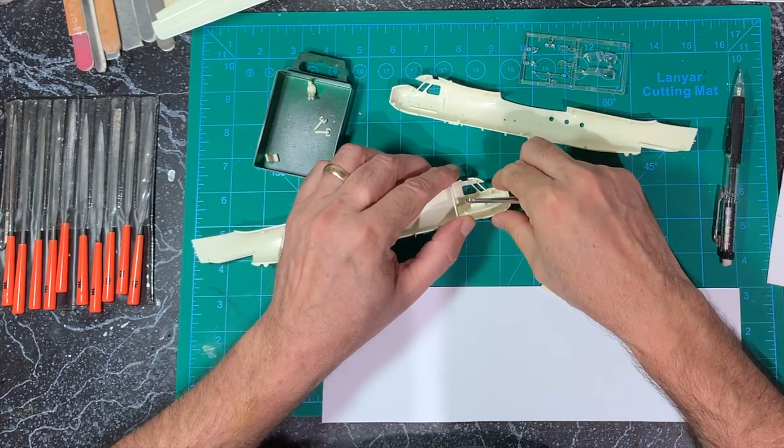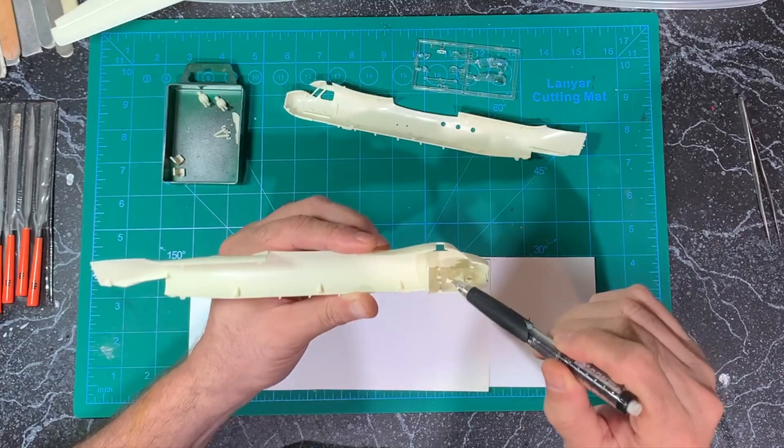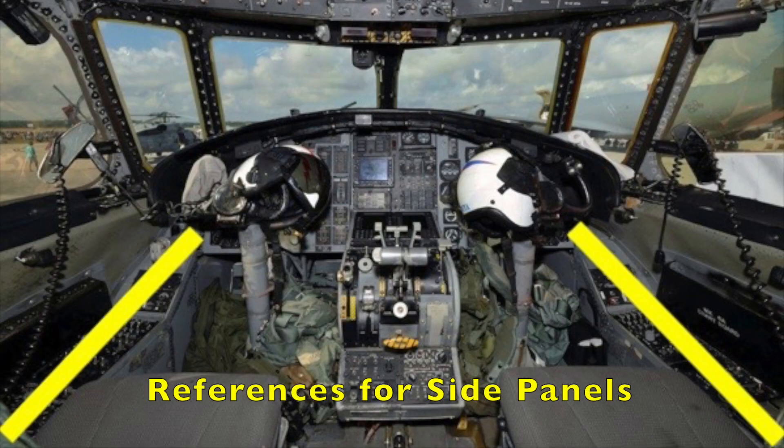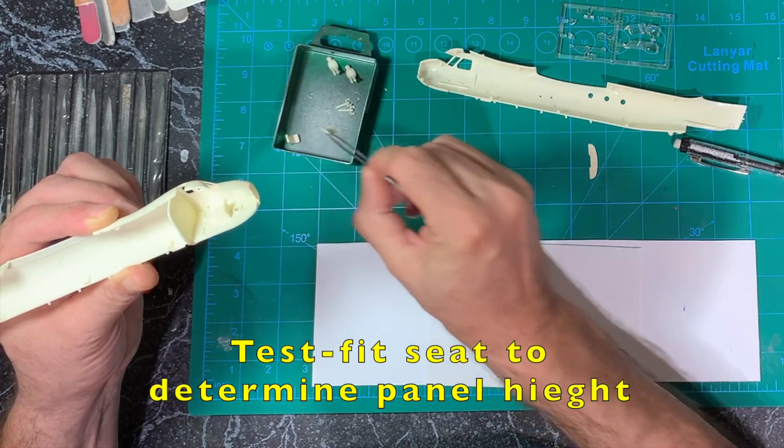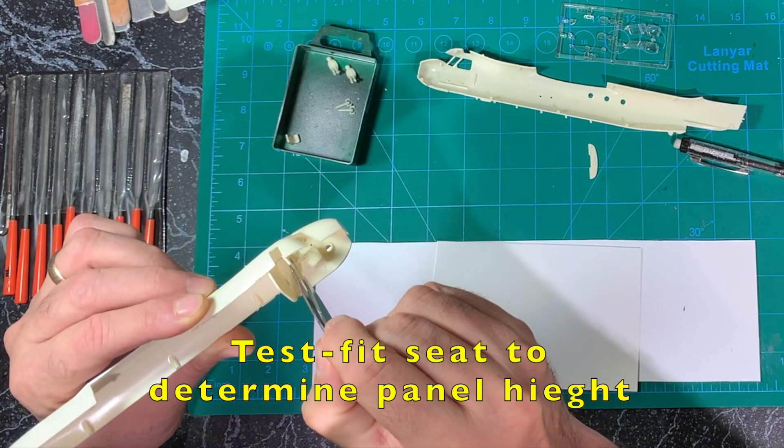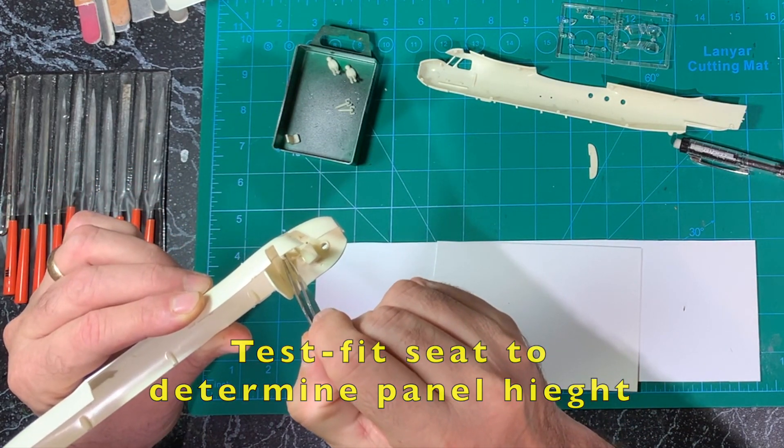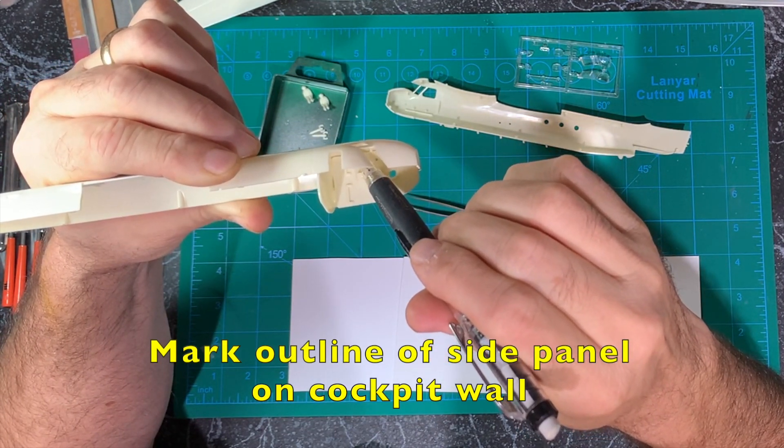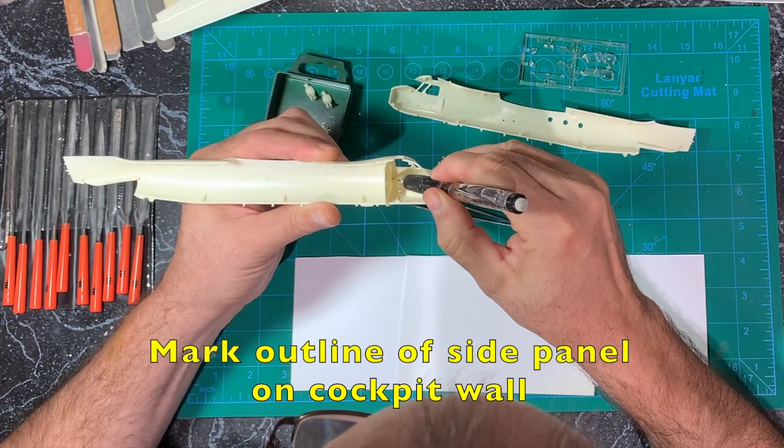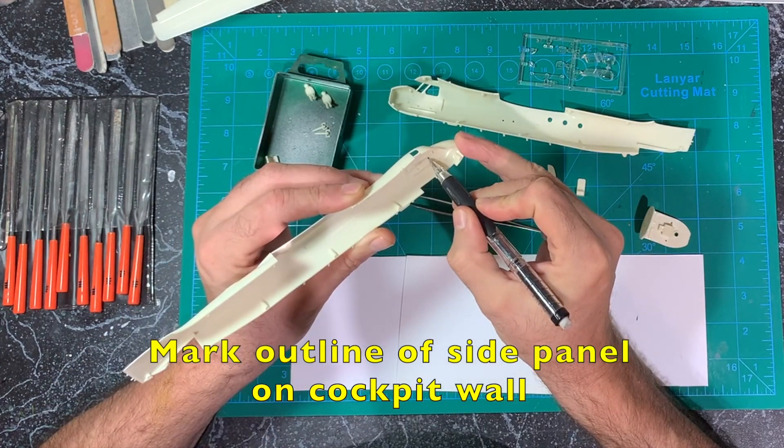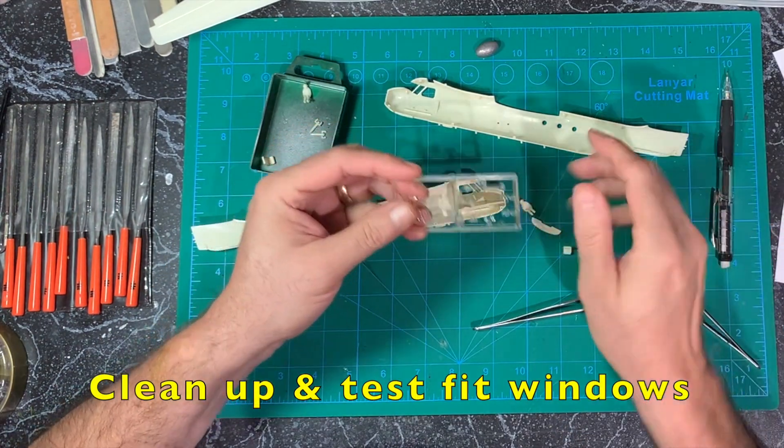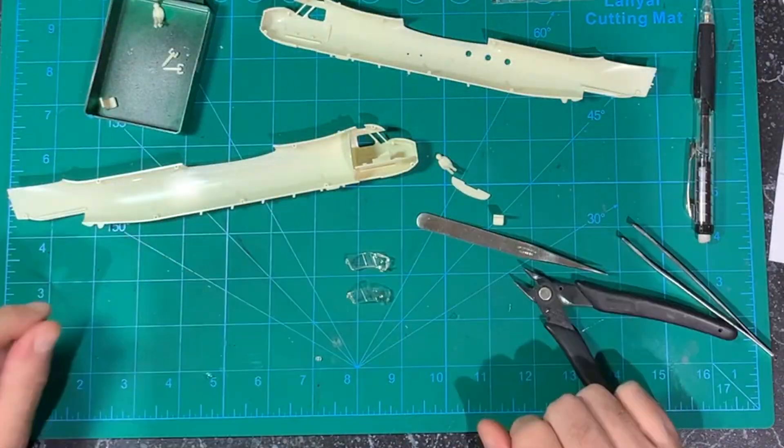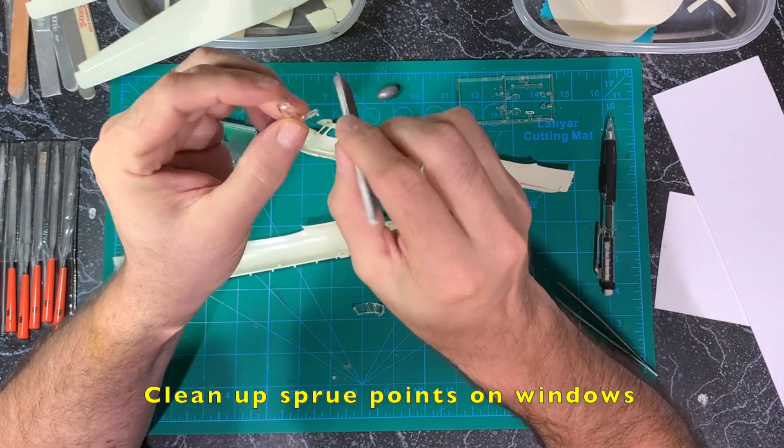I start with test fitting the cockpit floor and back wall into the fuselage. Consulting references for the side panels and noting their locations, I dry fit the pilot seat to get the approximate panel location on the wall between the seat and the window. Marking where each panel edge should be and drawing those perimeter lines gives me a rectangle on the cockpit wall representing the side panel. As I remove the clear parts to test fit them inside the cockpit, I begin to realize just how much work they're going to require.